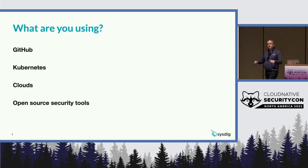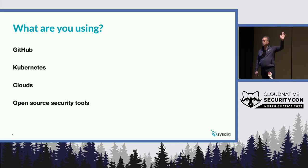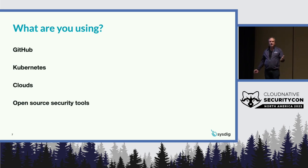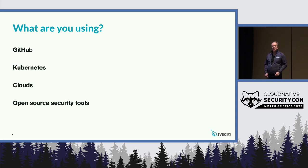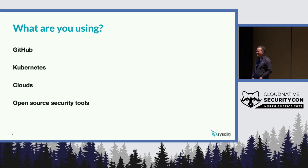As we get going, I want to make sure you do some work in the crowd too. Raise your hand if you're using GitHub in production. Kubernetes? What about on clouds versus on-prem? And who is using any open-source security tools right now? Falco — thank you, crowd. Hopefully this gives everyone a little sample of where we're at.